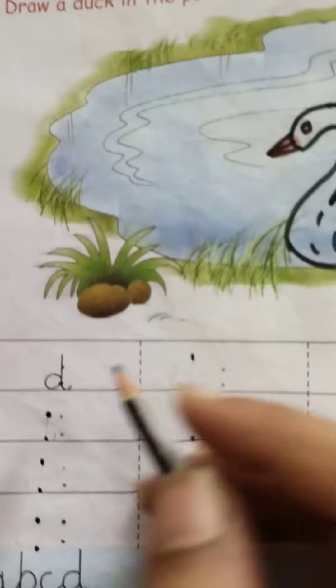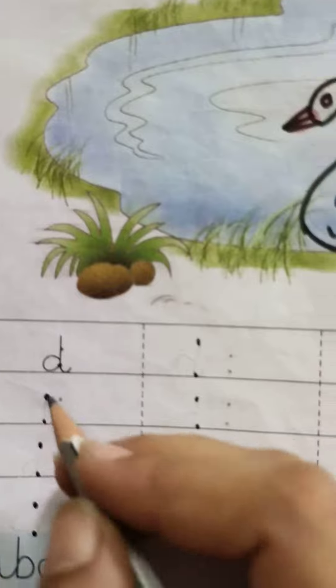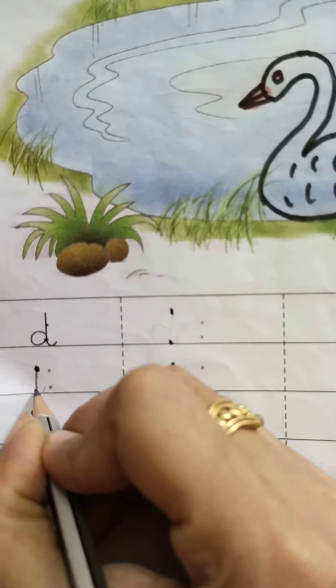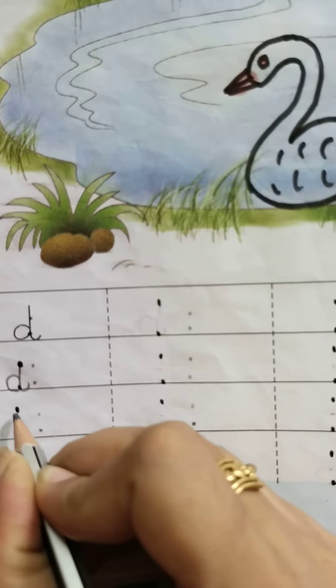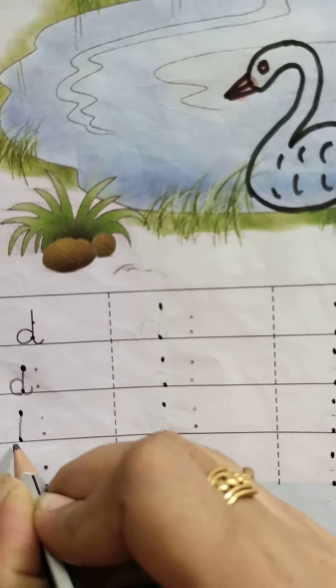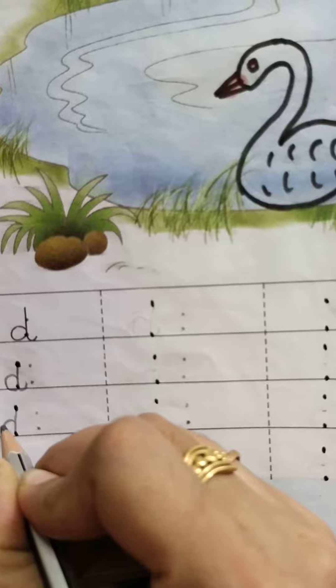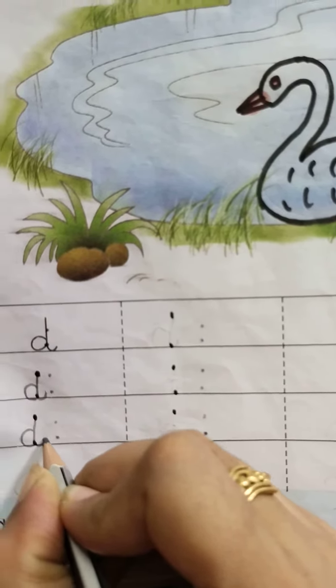Now we will learn how to write letter D. Upstanding line then curve like this and tape, standing line. You can do it either, or you can do it with C, then tape.